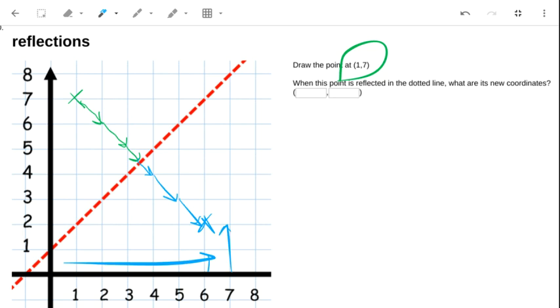So I'm 6 along and 2 up, so the coordinates are 6, 2.